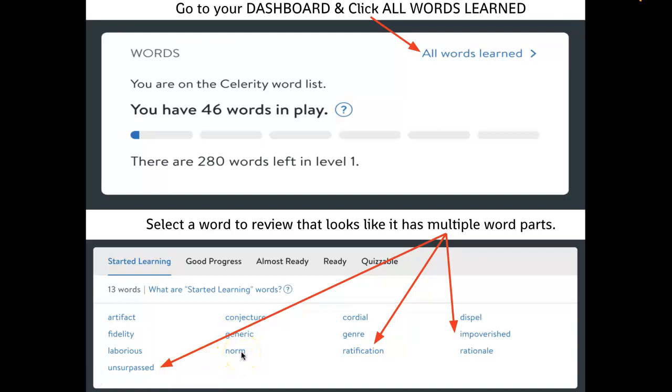And so today that's what you're going to be doing. You're going to go in, and you're going to find words that look like they have multiple word parts. So when I look at genre, I don't really see any prefixes and suffixes, but when I look at unsurpassed or ratification or impoverished, I can tell already that they have multiple different word parts, and so that's what you're going to be looking for today.